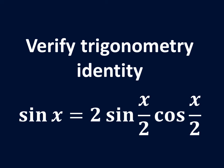In this video, we will learn to verify the trigonometry identity sine of x is equal to 2 times sine of half of x times cosine of half of x.